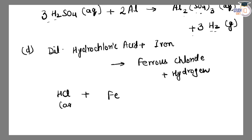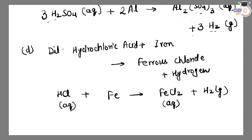Balanced equation: HCl (aqueous) + Fe → FeCl₂ (ferrous chloride, aqueous) + H₂ (gas). Balance check: Fe — 1 each side. Chlorine — 2 atoms, so 2HCl. Hydrogen — 2 atoms. Equation is balanced.